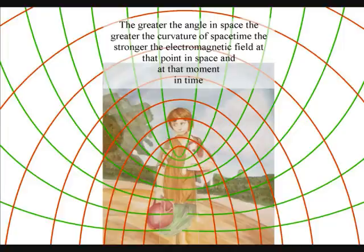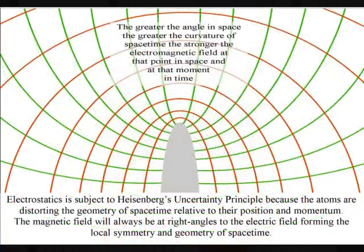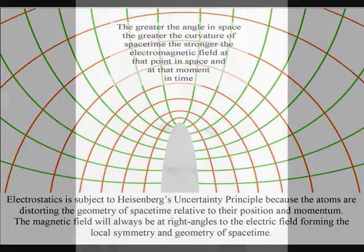This will be relative to the position and momentum of the objects creating the time variations, the atoms themselves. The greater the angle in space, the greater the curvature of space-time, the stronger the electromagnetic field at that point in space and at that moment in time.